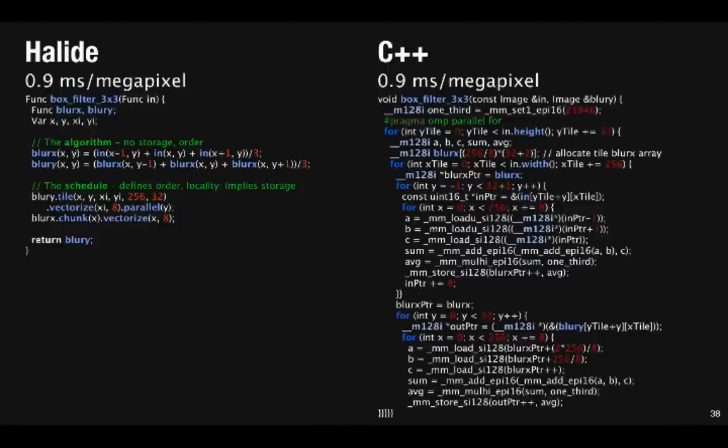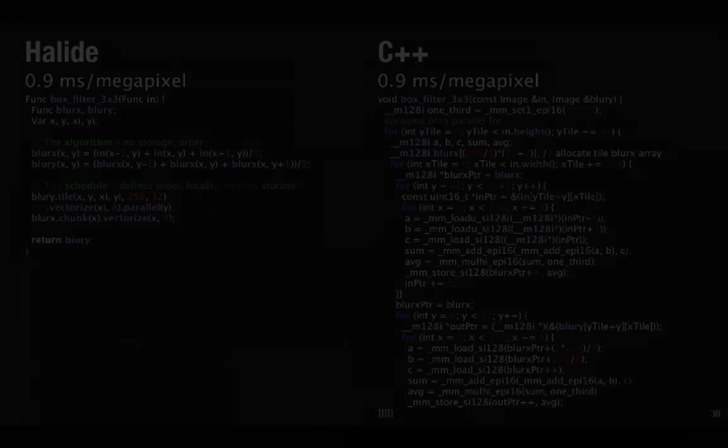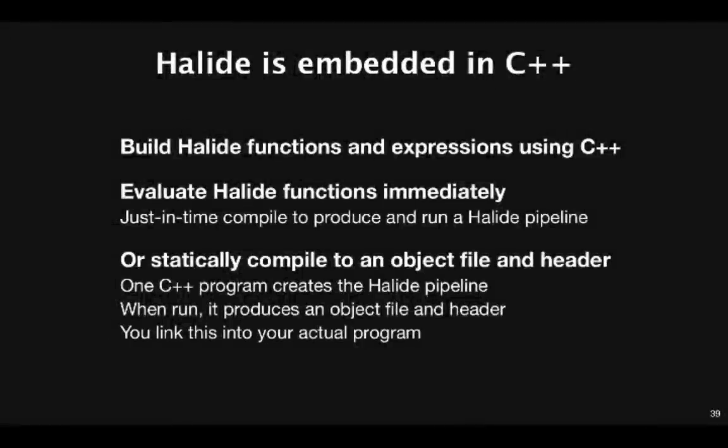Now let's get into some technical details about how Halide is built. Halide is not a standalone language. It's embedded in C++, which means we use C++ operator overloading to build Halide expressions and functions. When you want to evaluate one of these functions into an image, we just-in-time compile to build and run a Halide pipeline. If you want to avoid the overhead of just-in-time compiling, or if you don't want to link our full compiler into your binary, you can also statically compile a Halide pipeline to produce a quite small C object file and header. The C object file includes its own runtime, so you have no other runtime dependencies. This is what we do for production code, especially code that's going to run on mobile devices.